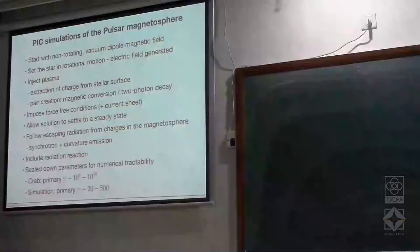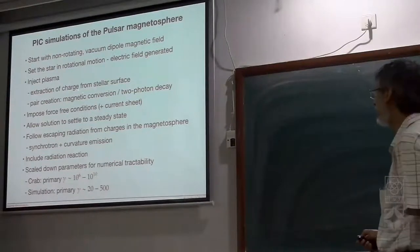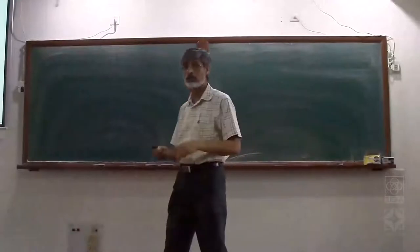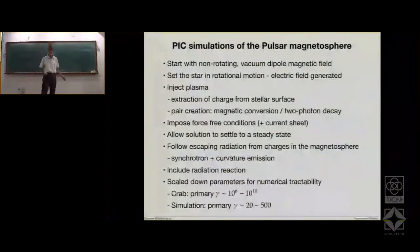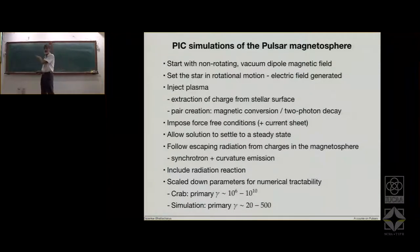Pair creation is attributed to two processes already discussed: one is magnetic conversion where a photon can split by interacting with a magnetic field, and two-photon decays — gamma-gamma interaction. These two processes are introduced in an effective fashion in the model.